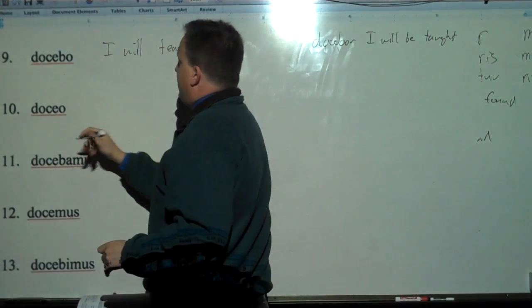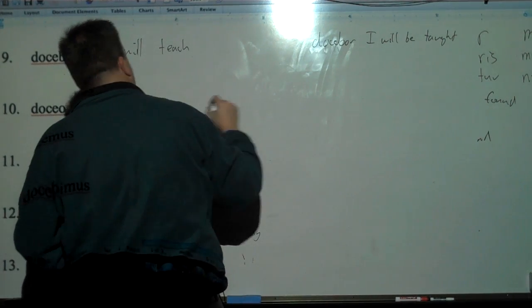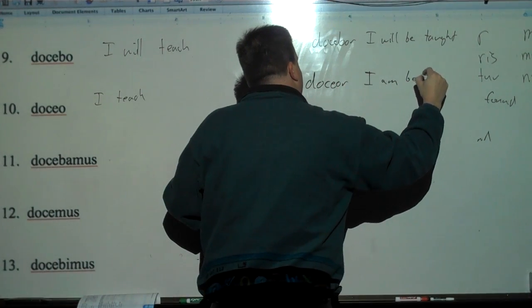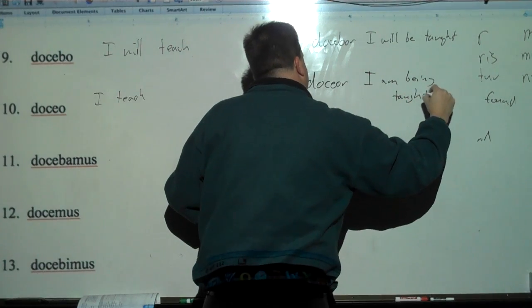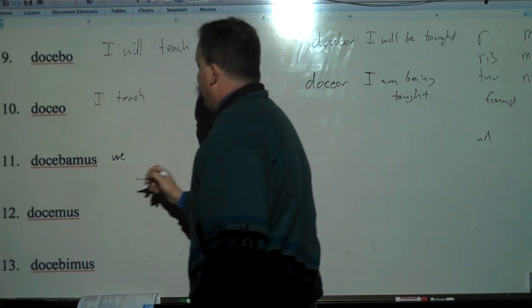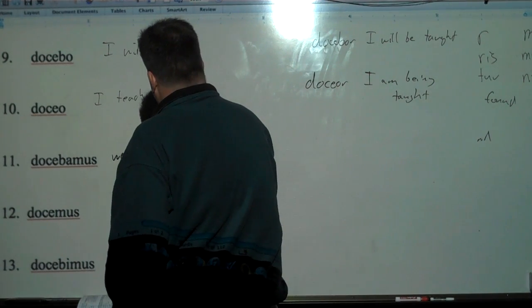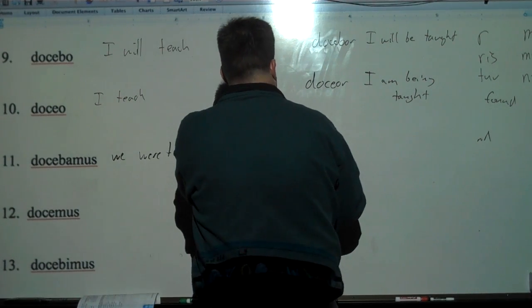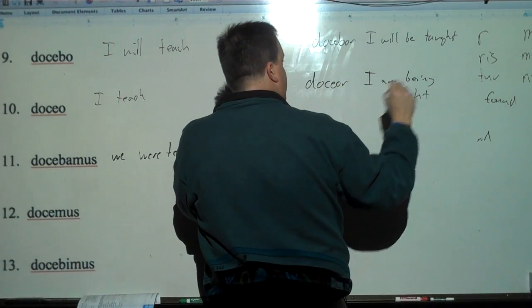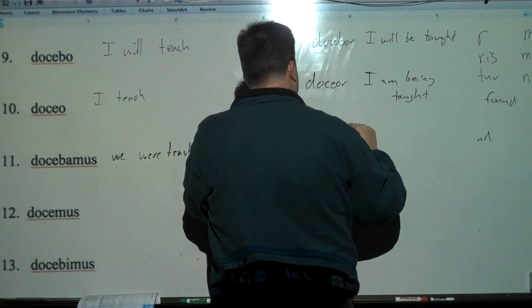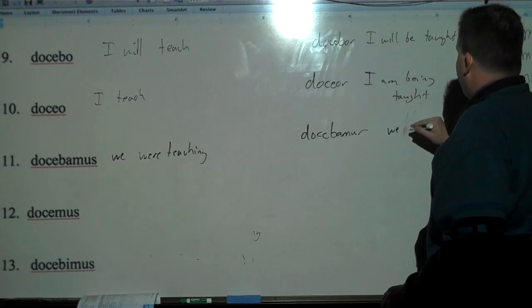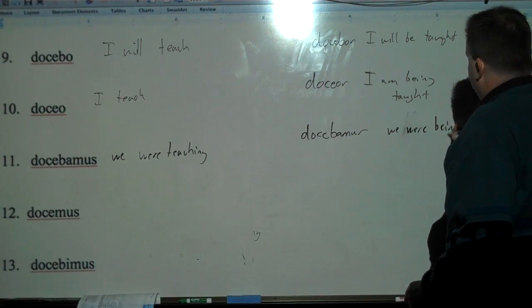Dokeo. Present tense. I teach. And then we go dokeor. I am being taught. Dokebamos. We. And then B-A makes it imperfect. We were teaching. And then mus goes to mor. So we go dokebamor. We were being taught.